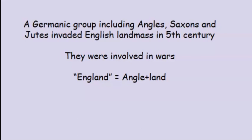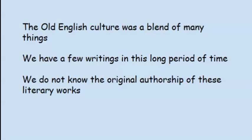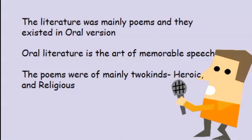Remembering these historical and political features, we can understand the type, style, and characteristics of the literary works. The Old English population was a blend of many different types of people, and so was their culture and writings. We find a small amount of writings during this long period of time, and we are not certain about the authorship of these literary works. We do not find much variety in Old English literature — the works were mainly poems which existed in oral versions.